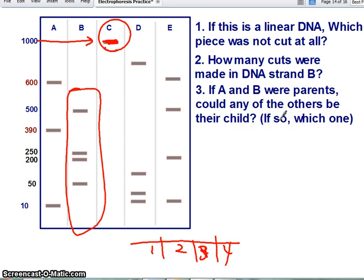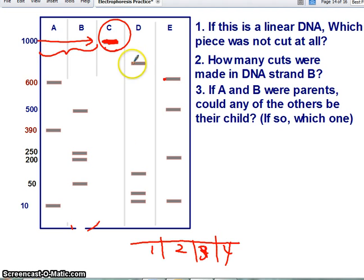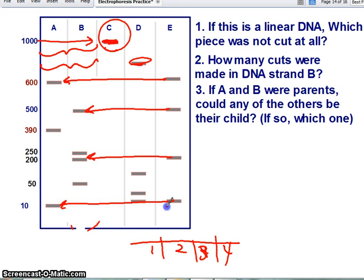If A and B were parents, could any of the others be their child? We're trying to keep this really simple, so I know some of these probably do not actually match up perfectly, but I can tell you what I was intending to go for here was the fact that the only one that could be their child would be E. The rule would be that the child had to get every band they have had to come from either one parent or the other. So if we look at C, C has a band right here, and neither of these two parents have it, and D has a band here, and neither of the parents have it. But E, parent has this one, parent has this one, parent has this one, and a parent has this one, so this one could be their child.